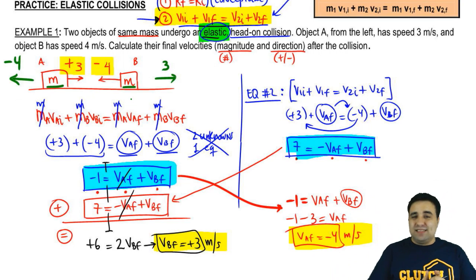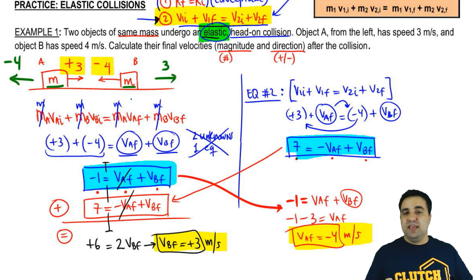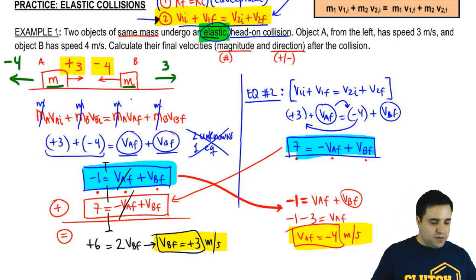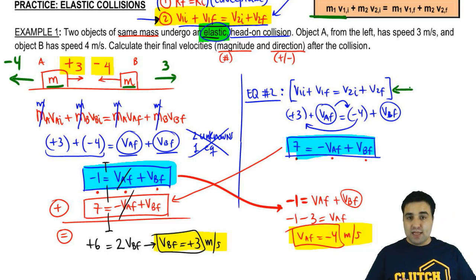So, that's it for this one. Elastic collisions are a little bit more complicated, a little bit more work, because you do have fewer numbers that are going to be given to you, and you do have to use two equations to solve them. You've got to use the big equation, the big momentum equation, and you've got to use the extra elastic collision equation. So, that's it. Let me know if you have any questions.